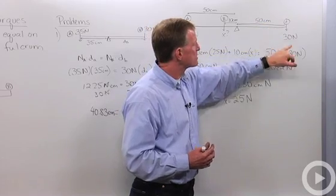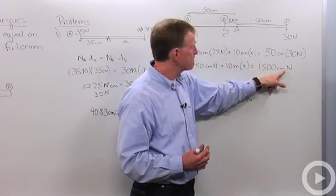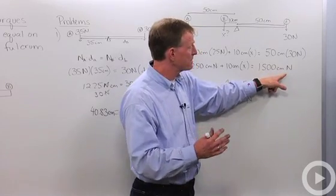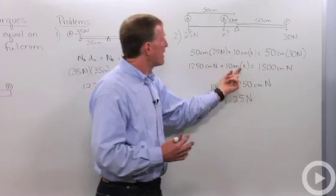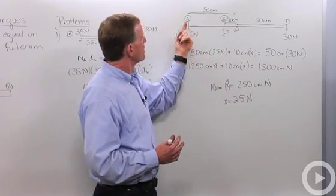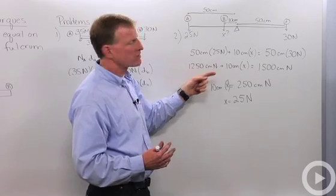If I multiply 50 centimeters times 30 newtons, I see that this is 1500 centimeter newtons, the unit for torque. And on this side, I've got 50 times 25 is 1250 centimeter newtons.